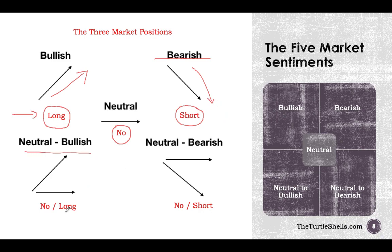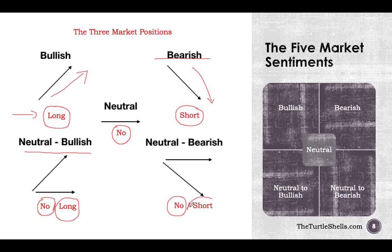If I am neutral to bullish, this is particularly useful for advanced traders, such as those into options trading. When neutral to bullish, I may or may not take a position, but if I do take a position I will go long, because I feel the market is less likely to go down — it will either go flat or go up. The same goes for neutral to bearish: I either take no position or, if I do, I go short. We first decide our view, and depending on that view we choose which position to take. Japanese candlesticks help us decide what our view is and exactly what position we need to take.